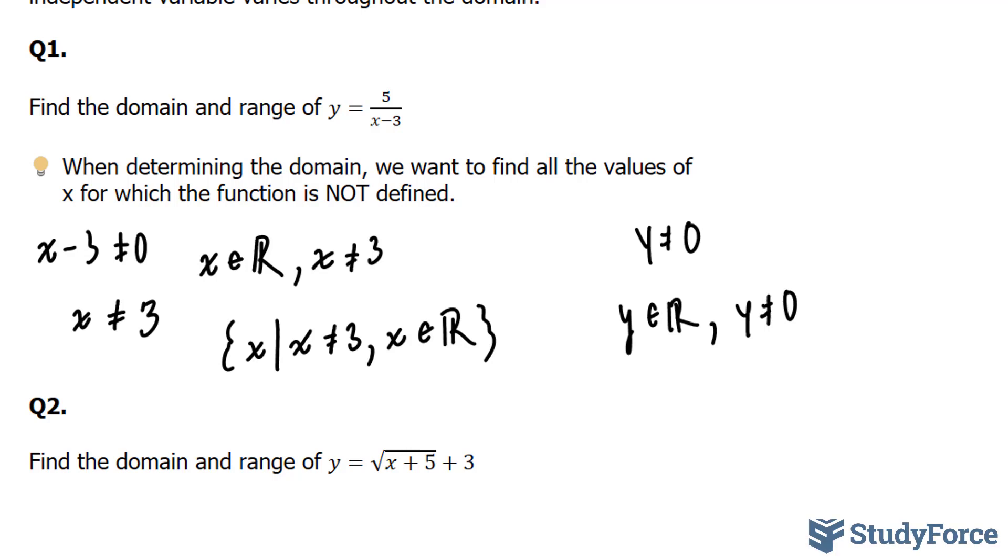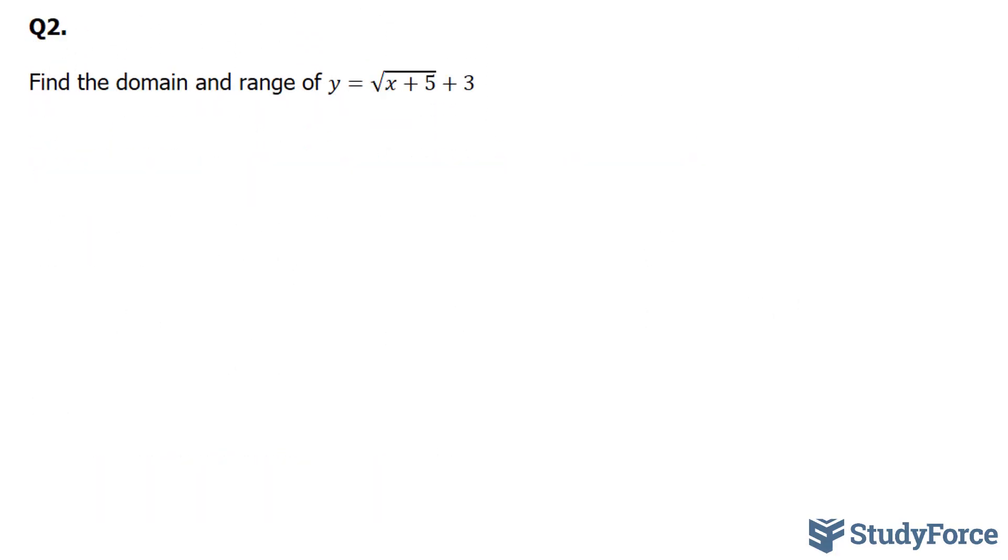Let's move on to question number 2. They ask us to find the domain and range of this function. Now we know from past examples that if the radicand, which is the number that represents what's inside of this radical, is a negative number, you cannot evaluate it to a real number. So we know that this radicand, x plus 5, has to be greater than 0, or even equal to 0.